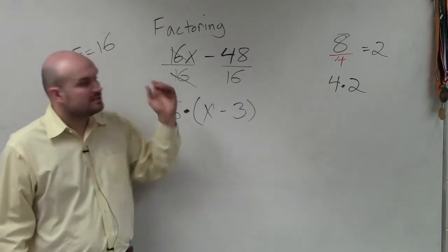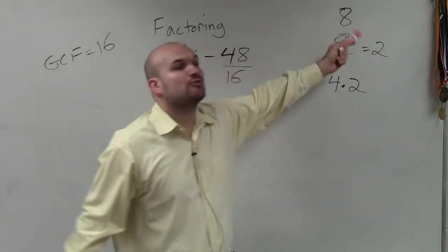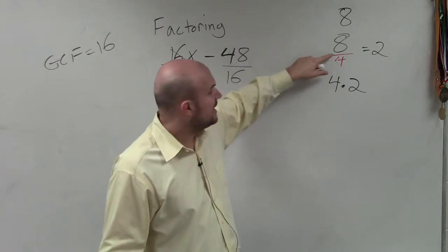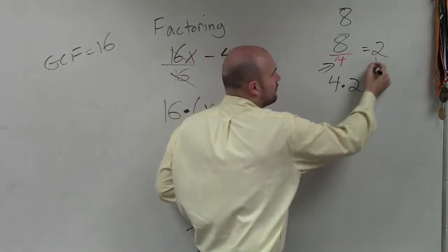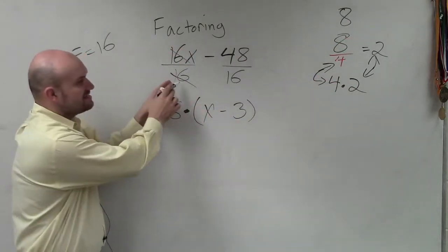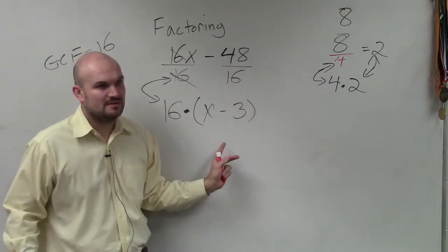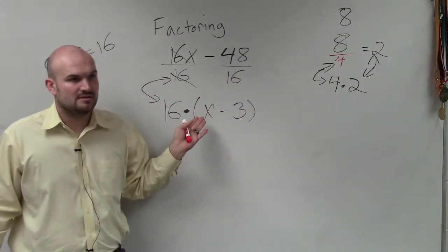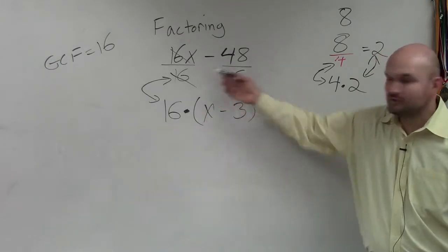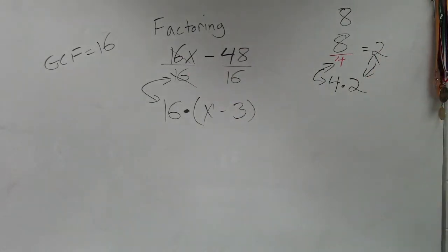OK, look at it again. If I want to rewrite 8 as a product — as a multiplication problem — I take 8, divide it by 4, and get an answer. I take what I divided by and what my answer was, and I multiply those two values to get a new product. What did I divide by? 16. What was my answer? x minus 3. See how this is the same thing — except one is with a number, and this is with expressions. So when you take your GCF and divide, you rewrite it multiplied by the quotient. All right.